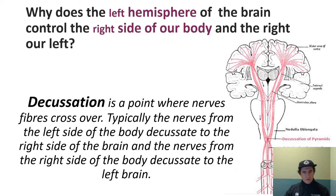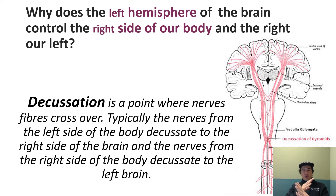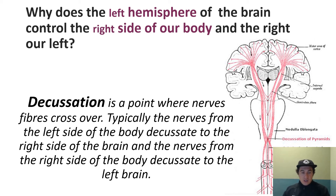Something we often know but don't understand why is why the left side of the brain controls the right side of the body. This is called decussation — there's a space just before the brain stem where the nerves running up your spine cross over, feeding the different hemispheres of the brain. This is why the left side generally controls the right side.